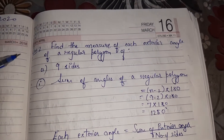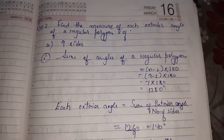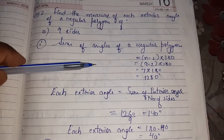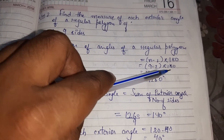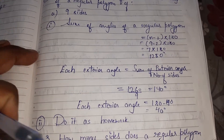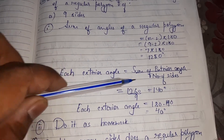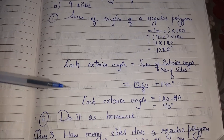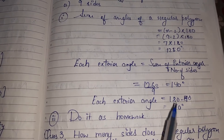See the next question: Find the measure of each exterior angle of a regular polygon of 9 sides. There is a formula for the sum of angles of a regular polygon: (N minus 2) into 180. So with N equal to 9, it is 9 minus 2 into 180, which is 7 into 180, coming out to be 1260. Now each interior angle equals the sum of interior angles divided by the number of sides: 1260 divided by 9 gives 140.